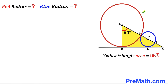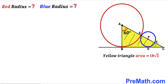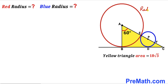Welcome to pre-math. In this video we have two circles of different dimensions. The red circle with center A and the blue circle with center P are tangent to each other. Points B, D, and E are the points of tangency, giving us the yellow shaded triangle ABC. Angle BAC is 60 degrees, and the area of this yellow shaded triangle is 18√3 square units. Our task is to calculate the radius of the red circle and the radius of the blue circle.